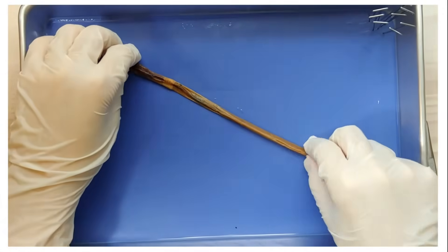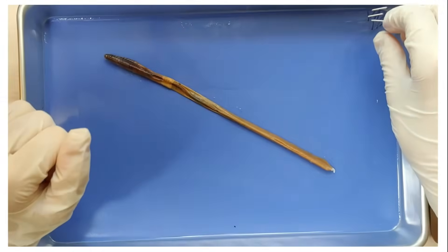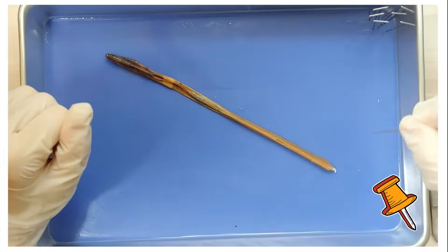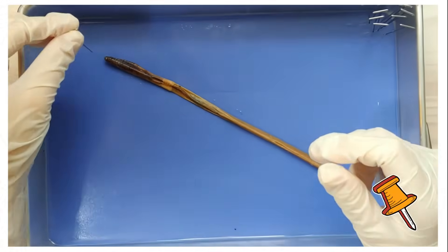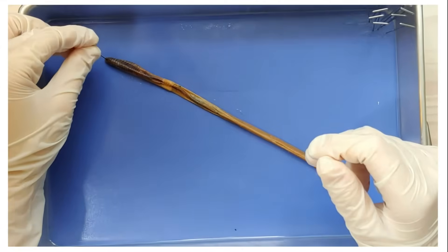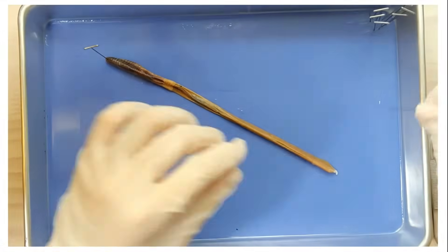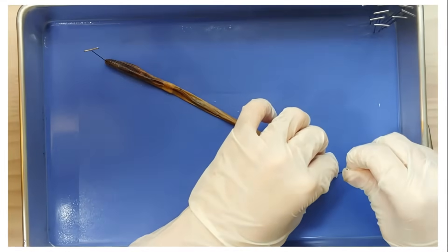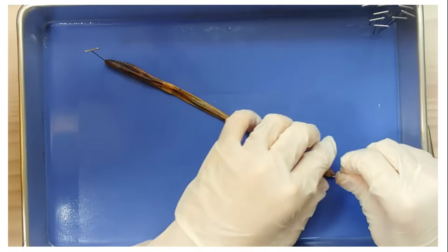Now the first thing I'm going to do is pin the worm diagonally across the dissection tray, first at the head and then at the end of the tail. This makes sure that it doesn't move around too much when I dissect it.